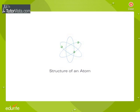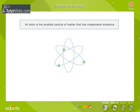Structure of an Atom. An atom is the smallest particle of matter that has independent existence. It is too small to be viewed even under a powerful microscope.